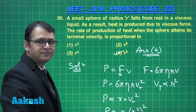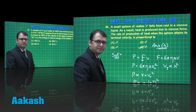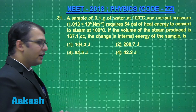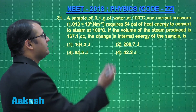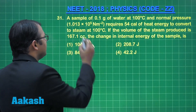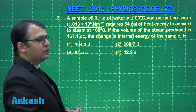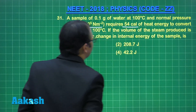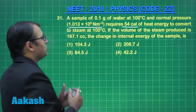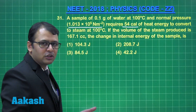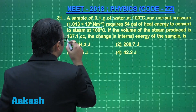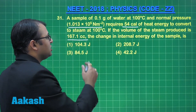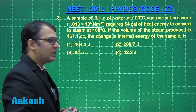Let's move forward to question number 31. This question belongs to thermodynamics. A sample of 0.1 gram of water at 100°C and normal pressure of 1.013 × 10⁵ N/m² requires 54 calories of heat to convert into steam at 100°C. The volume of steam produced is 167.1 cc. The change in internal energy of the sample is being asked.